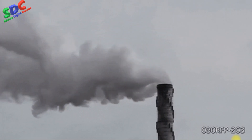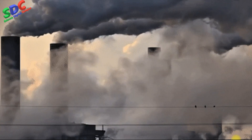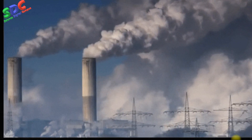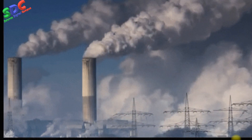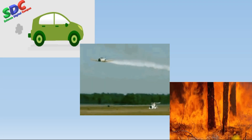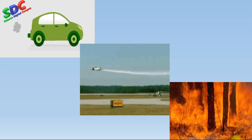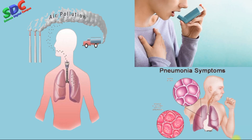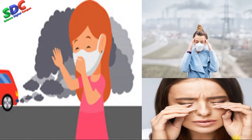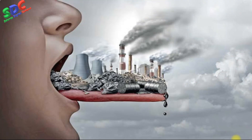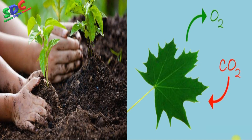When air comes in contact with harmful chemicals like smoke, dust, and other chemicals, air gets polluted. Harmful chemicals and smoke are released by factories, vehicles, burning wood, and so on. These chemicals mix with air and cause air pollution. Air pollution mainly causes respiratory problems like asthma and pneumonia. Asthma causes narrowing of airways and shortness of breath, while pneumonia is a kind of lung infection. Air pollution also causes eye irritation, headaches, and more.